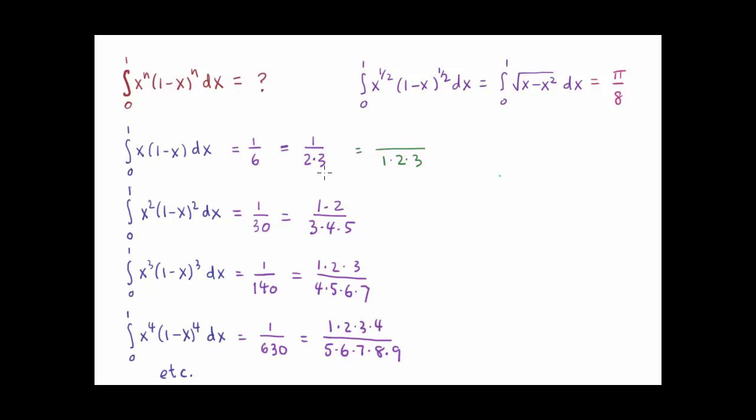For example, in the first case, write two times three as one times two times three, which we can do for free. In the next case, write one times two times three times four times five, which is five factorial, but of course, to balance things out, we'll need to multiply the top by one times two as well.